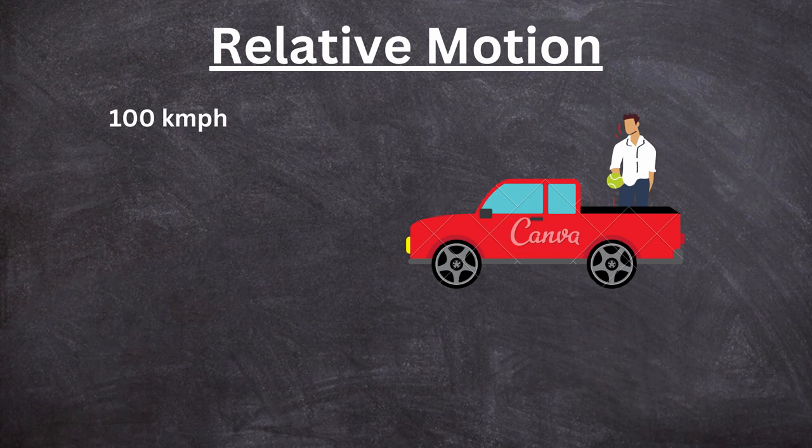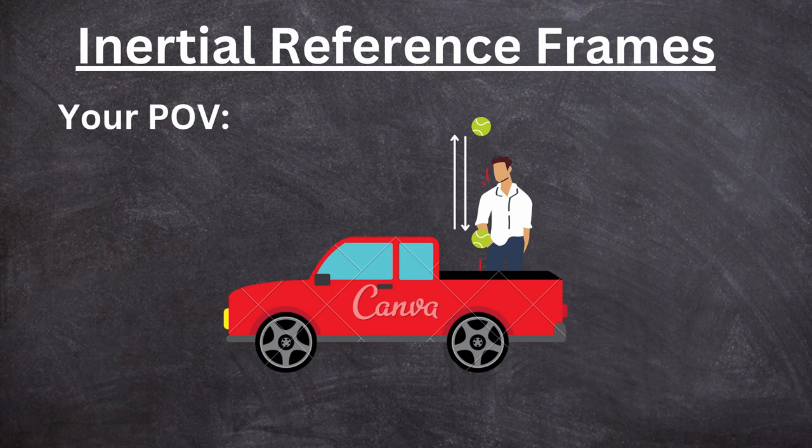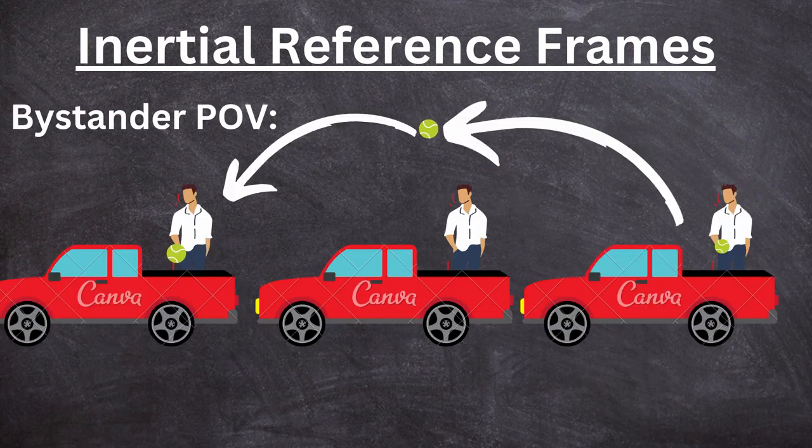Here's another example. I'm in the street and I throw an object up — it comes back to my hand. To me, the object traveled a straight path. However, from the perspective of someone in a moving car, they would see it travel a parabolic path. This is relative motion — motion relative to your point of view.